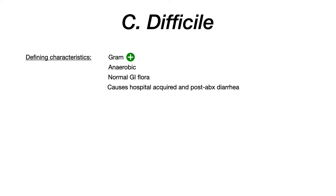C. diff is a gram positive anaerobic rod shaped bacterium that's normally found in the GI tract. This causes an infectious hospital acquired antibiotic resistant post-antibiotic diarrhea. What's really high yield about Clostridioides difficile is the virulence factors. There are two virulence factors that you need to understand and memorize, and I've got some easy mnemonics for both.